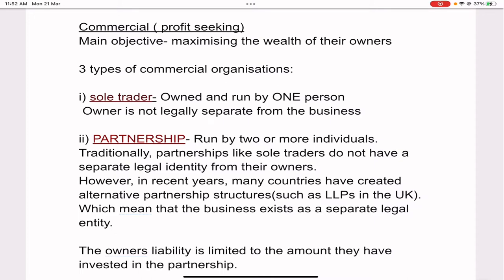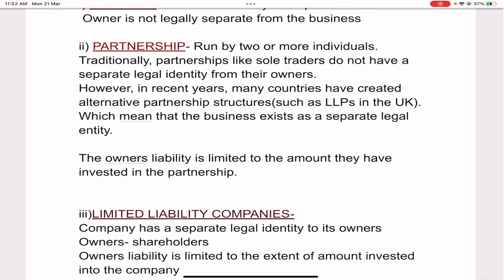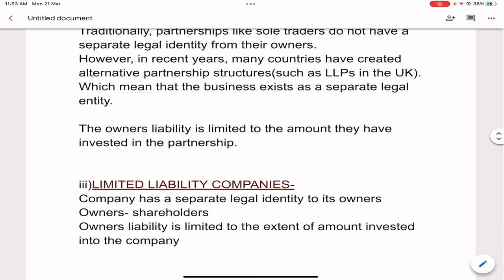Sole trader is owned and run by one person alone. The owner is not legally separate from the business — if somebody sues the business, they are suing the owner. Partnership is run by two or more individuals. Traditionally, partnerships like sole traders do not have a separate legal identity. However, in recent years many countries have created alternative partnerships such as limited liability partnerships in the UK, which means the business exists as a separate legal entity. The owner's liability in a partnership is limited to the amount they have invested.